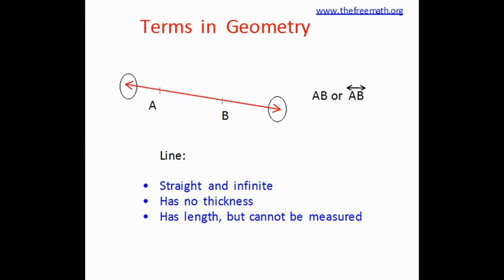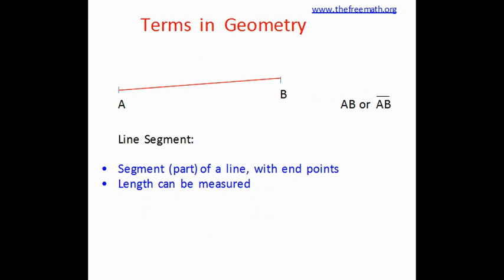Now the next concept is a line segment. A line segment is really a part of a line which has two endpoints. You can see these two points here, A and B, where A is a beginning point and B is the end point. You can see that the line segment is named as AB and there is a little dash on AB that shows that it is a line segment. It also doesn't have thickness because it's part of a line, but in this case the length can be measured.